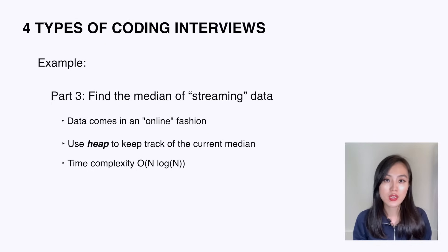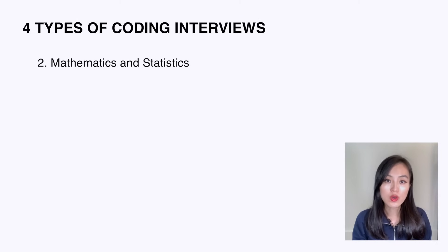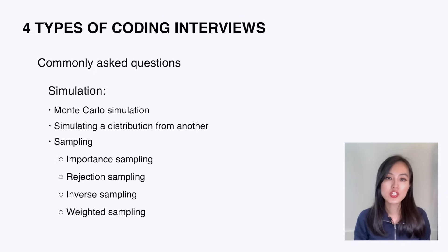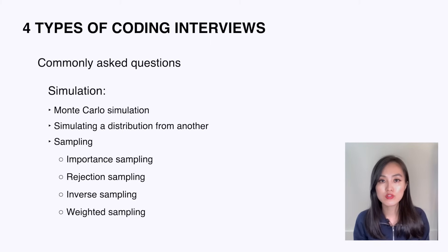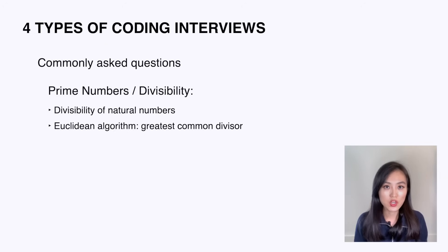The second type is coding questions on mathematics and statistics. Unlike the previous type, these rarely appear in software engineer interviews but are pretty common in data science interviews. They require undergraduate-level mathematics and statistics knowledge in addition to coding capability. Common concepts include simulation, Monte Carlo simulation, simulating a distribution from another distribution, and various sampling techniques. There are also questions around prime numbers or divisibility, such as calculations involving divisibility of natural numbers and the Euclidean algorithm for computing the greatest common divisor.